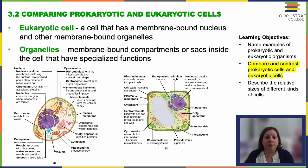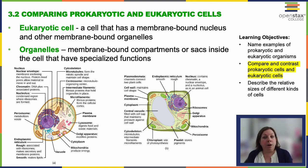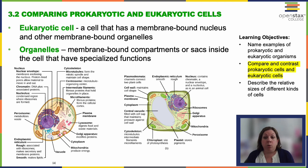Eukaryotic cells — very briefly, because we'll go into a lot more detail later — have membrane-bound nuclei and membrane-bound organelles like mitochondria, or chloroplasts if it's a plant cell. These organelles are membrane-bound compartments inside the cell with specialized functions. We'll look at those organelles in a lot more detail in the next section.